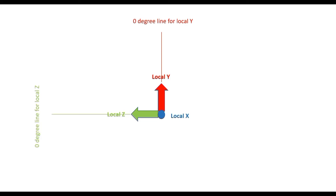It is not always the case that we will see the local y and local z along the vertical and horizontal directions, or at their zero-degree positions. To understand why, let us revisit the right-hand thumb rule discussed at the inception of this series — you can access that session via the link appearing on screen. The first thing to understand is that local x, local y, and local z are mutually perpendicular to each other, with 90 degrees between all axes.